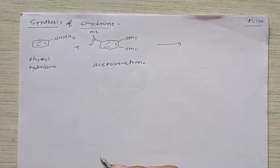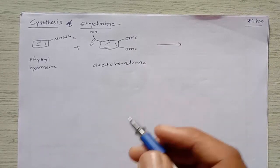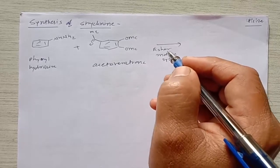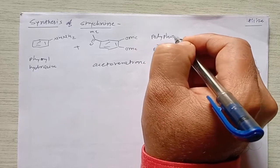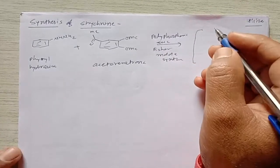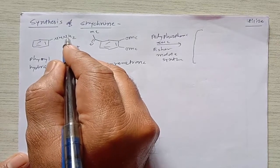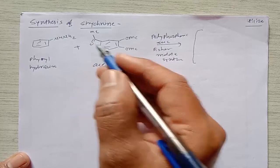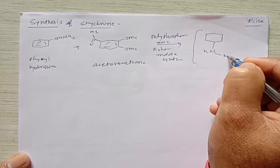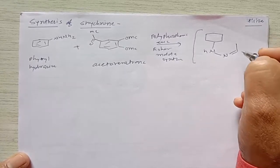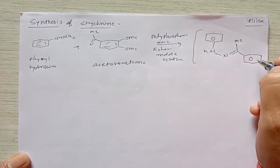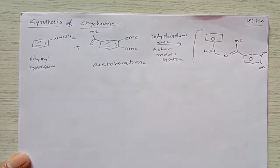We can use these starting materials via Fischer Indole synthesis. Using polyphosphoric acid, we can synthesize the indole. In the mechanism, initially the NH2 group of phenyl hydrazine combines with the carbonyl group, giving formation of a compound where there is an NH. It combines with the carbonyl group to give formation of an imine — a compound formed after condensation using polyphosphoric acid.